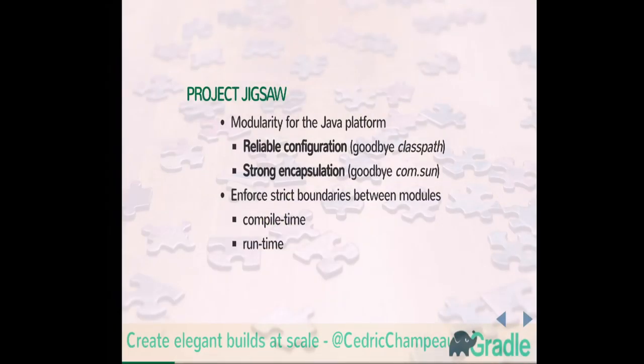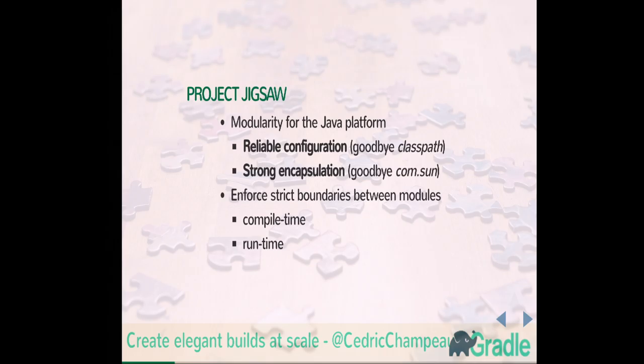The second aspect is strong encapsulation — a concept we all know in object-oriented programming. The idea is that you shouldn't touch what you're not supposed to touch. Java has traditionally been very bad at encapsulating things. Even if you put fields private, you have tricks that let you read or even modify final fields. There's even sun.misc.Unsafe. For an API designer that's a nightmare, because as soon as people start using things they shouldn't use, you have a problem. This talk is about how you can use Jigsaw today with Gradle.